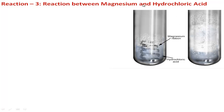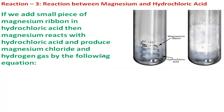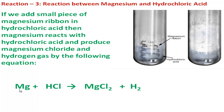Magnesium reacts with hydrochloric acid and produces magnesium chloride and hydrogen gas — not carbon dioxide gas, because there is no carbon in the reactants. The reactants are magnesium and hydrochloric acid, which contains hydrogen and chlorine. These three atoms — magnesium, hydrogen, and chlorine — produce magnesium chloride and hydrogen gas. Follow here for the equation of this reaction.